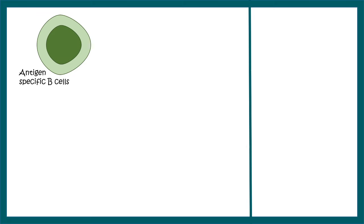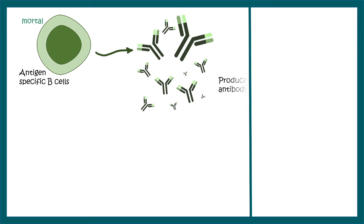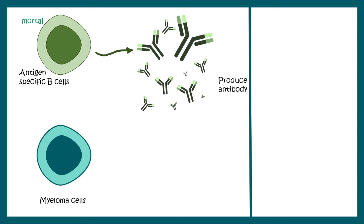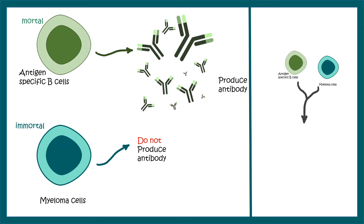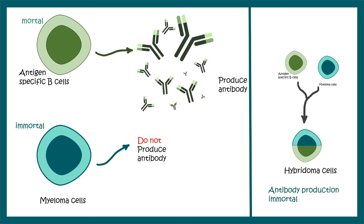The solution is hybridoma technology, where we use two types of cells. The first is the antigen-specific B cell extracted from the spleen of the immunized organism — it generates antibody but is mortal. We fuse it with a myeloma cell, which is immortal — actually a cancer cell line. When fused, they generate a hybridoma cell that has both characteristics: it can generate antibody and is immortal. So the problem is solved.